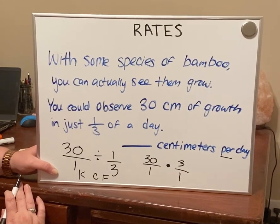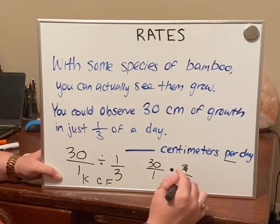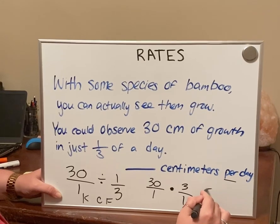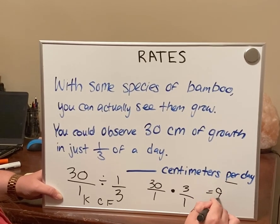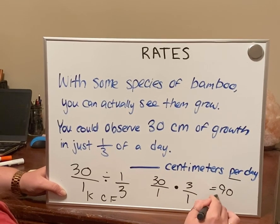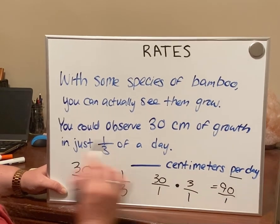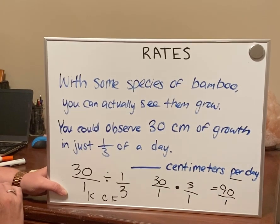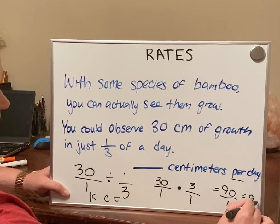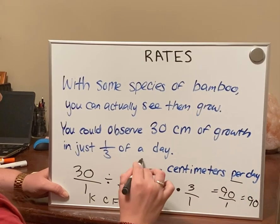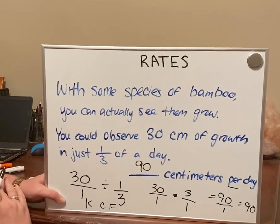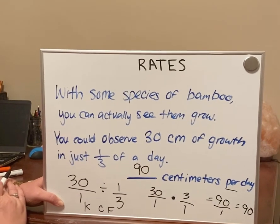Now we multiply straight across. 30 times 3 is 90, and 1 times 1 is 1. 90 divided by 1 is just 90. So my answer is 90 centimeters per day.